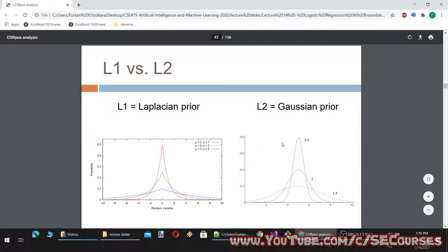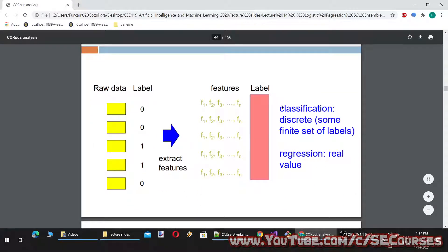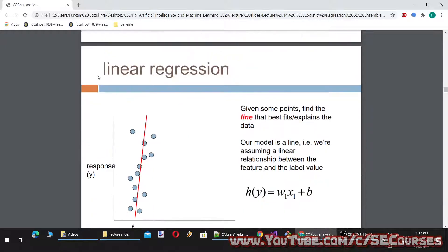There are L1 and L2 regularizations. Classification deals with discrete values — some finite set of levels — while regression deals with real values. The difference between classification and regression is that in classification the values are finite and discrete, like integer values, whereas in regression we use real, continuous values, such as a stream of voice data or car prices.